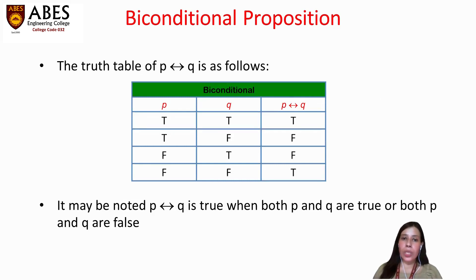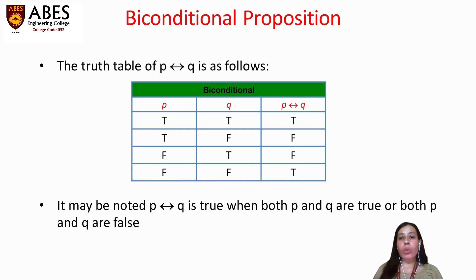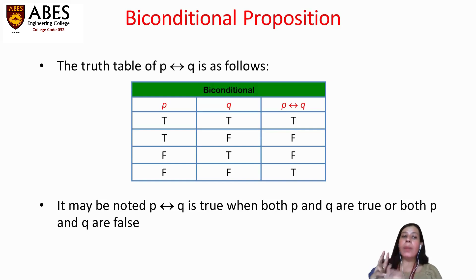Looking at the truth table for the biconditional: we have columns P, Q, and P ↔ Q. When P is true and Q is true, P ↔ Q is also true. When P is true and Q is false, P ↔ Q is false. If P is false and Q is true, then P ↔ Q is also false. If P is false and Q is false, then P ↔ Q is true. So P ↔ Q is true only when both P and Q are either both true or both false; if one is true and the other is false, the compound proposition is false.